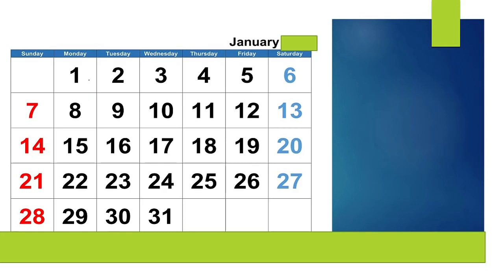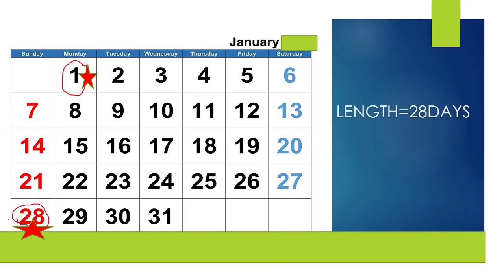For example, if you have your period on 1st January, mark this date and count up to the first day of your next cycle. If your next cycle begins on 28th January, mark that date. So this cycle is 28 days.